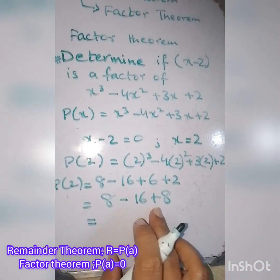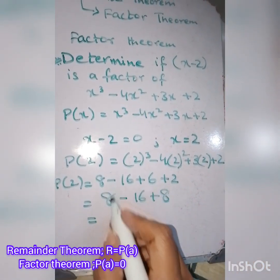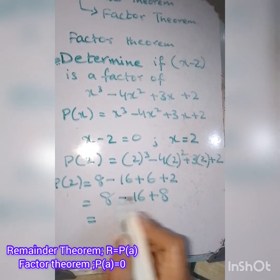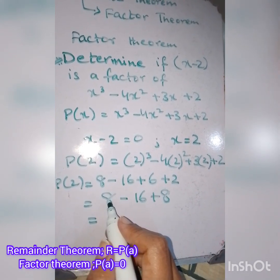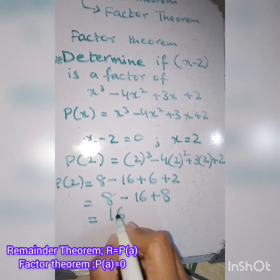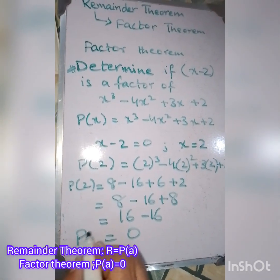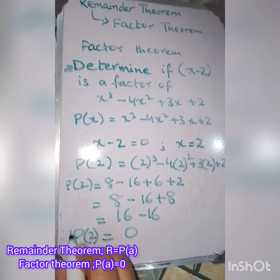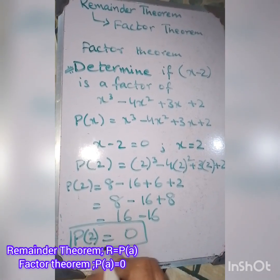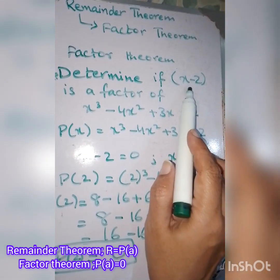Here we have got 8 and 8 from here, and 16. We will add the positive ones first: 8 and 8 is 16, and minus 16. The answer will equal zero.